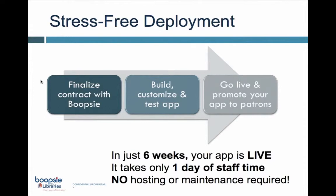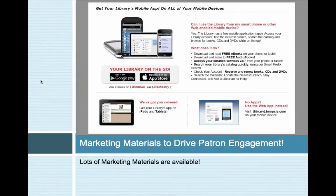A little bit about our deployment process. Once you finalize the contract with us, we go ahead and start building, customizing, and testing your app right away. On average, it takes about six weeks for apps to go live — we go through a few rounds of revision to make sure the app is exactly how you want it to look. We estimate it only takes about one day of staff time to get us the information we need to build your app — minimal burden on staff, no burden on IT, and no hosting or maintenance required. We provide complete wrap-around technical support, customer training webinars, and marketing materials on our website.